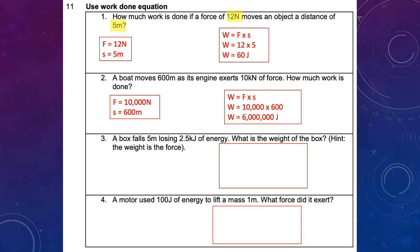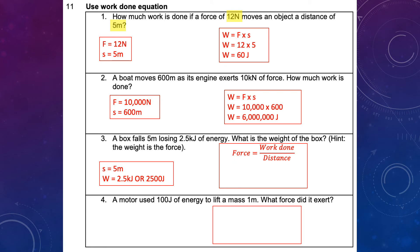Number 3: a box falls 5 meters, losing 2.5 kilojoules of energy. What is the weight of the box? First convert: 2.5 kilojoules equals 2,500 joules. The weight is the force, so rearrange the equation to force equals work divided by distance. Substitute: 2,500 divided by 5 gives you 500 newtons. Don't forget the units.